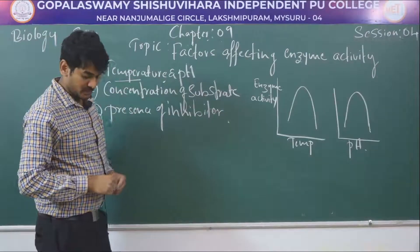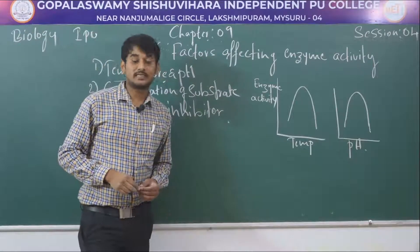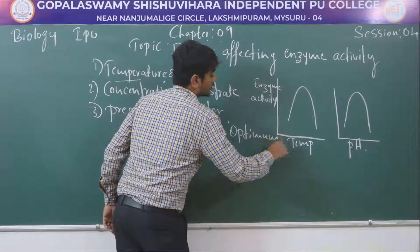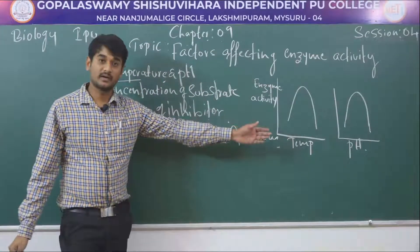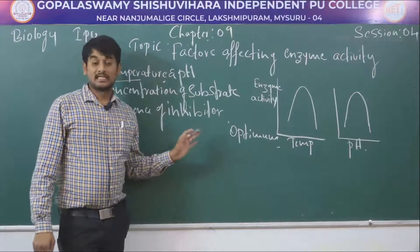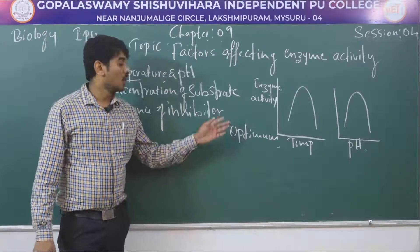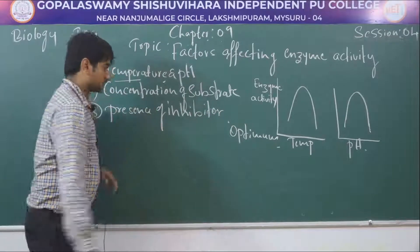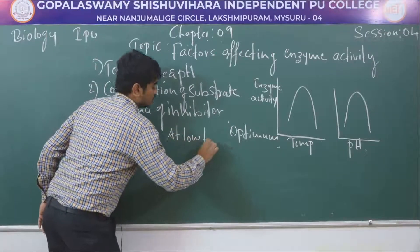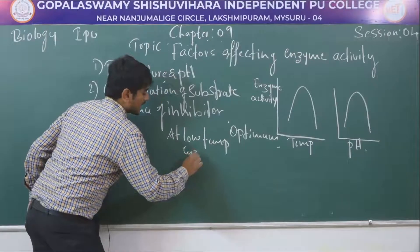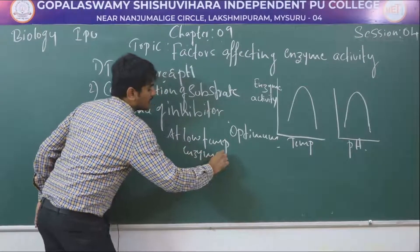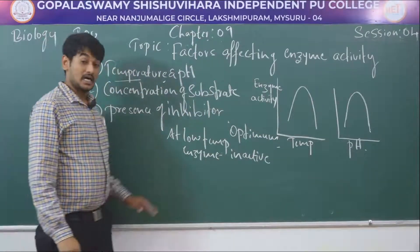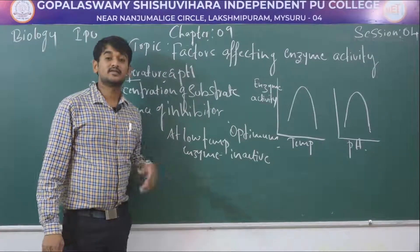The first one is temperature and pH. The enzyme shows highest activity at optimum temperature and pH. We know about pH — negative hydrogen ion concentration. The enzyme activity declines when above or below optimum value. At low temperature, the enzymes are inactive temporarily, not permanently.